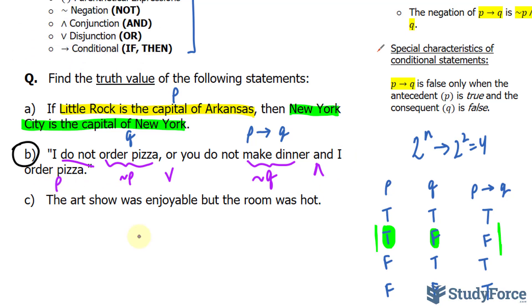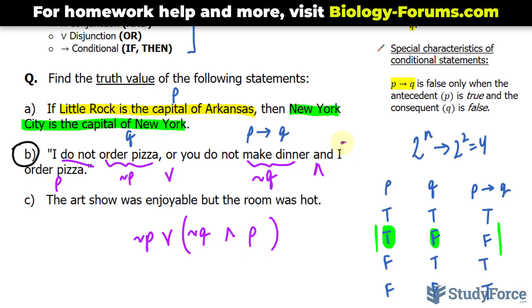If we combine all of these together, we end up with tilde P or, and I'll place these two parts in brackets in parentheses, so tilde Q and P. This is what the symbolic statement should look like, whereas this is the written one.